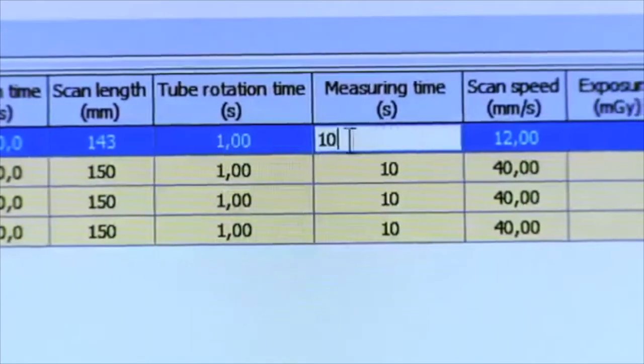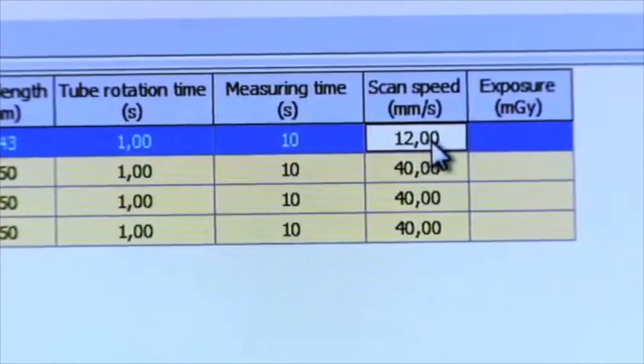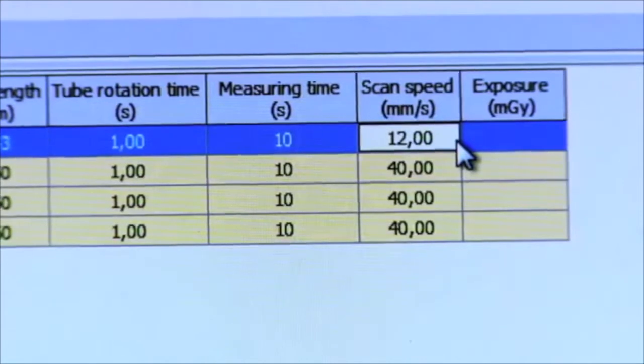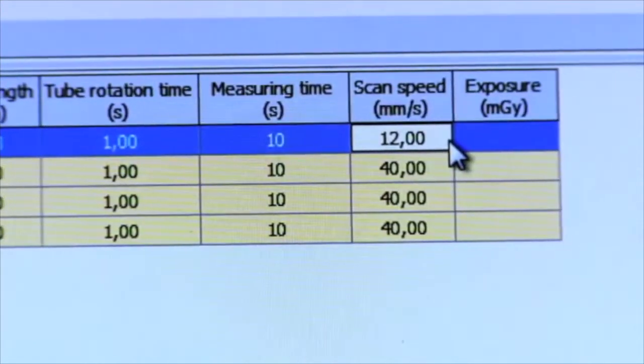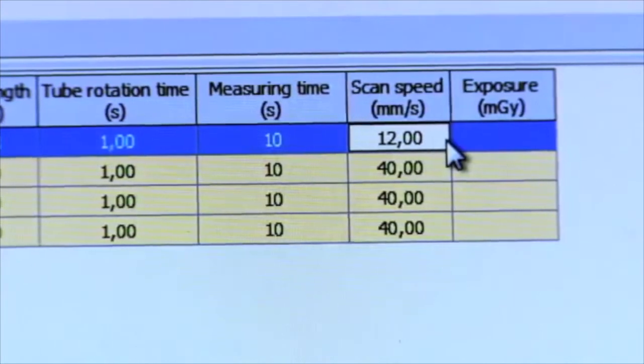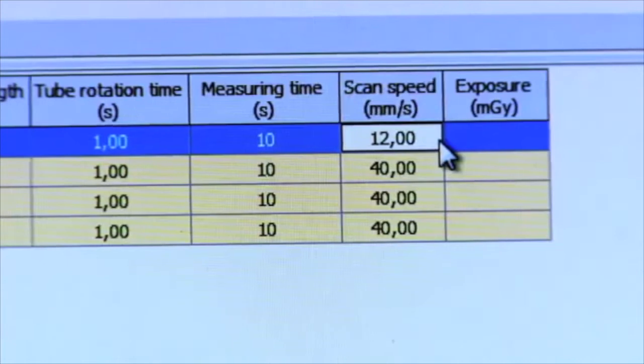Measuring time—this is the time it will take Ocean to collect the data from the measurement. This should cover the scan time. It is a good idea to choose parameters that shorten the scan time, for example, by selecting a higher pitch. When all parameters have been added, Ocean will automatically calculate the scan speed.